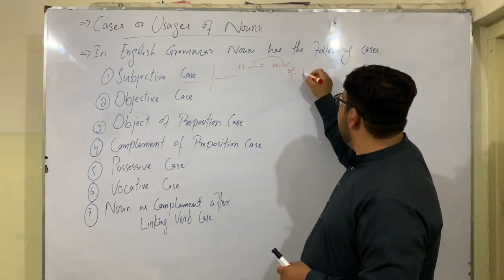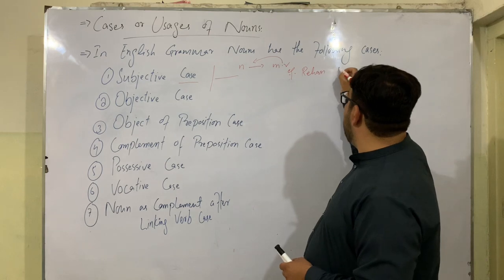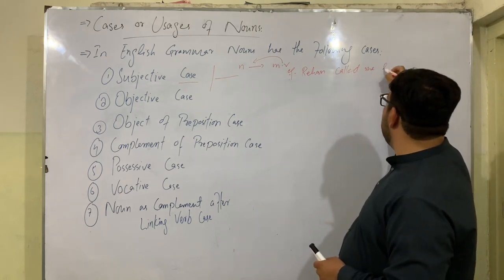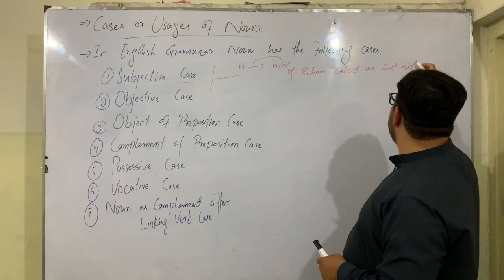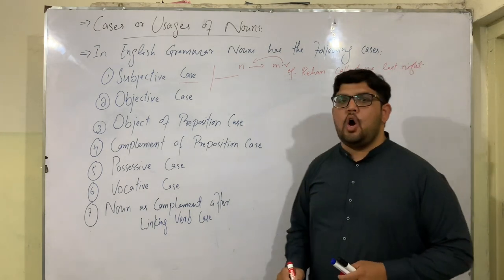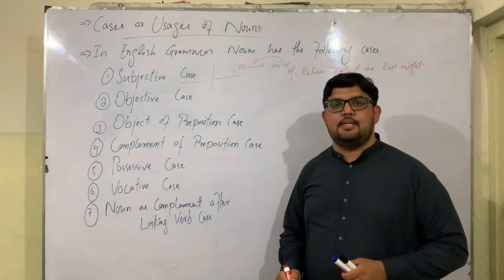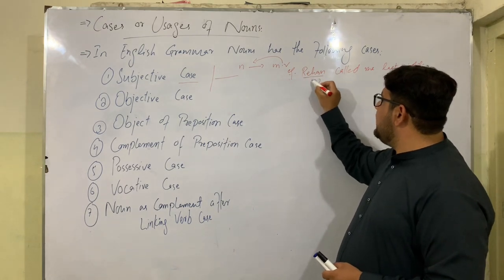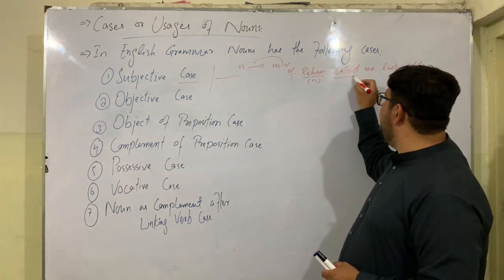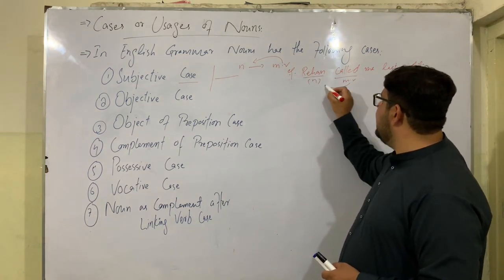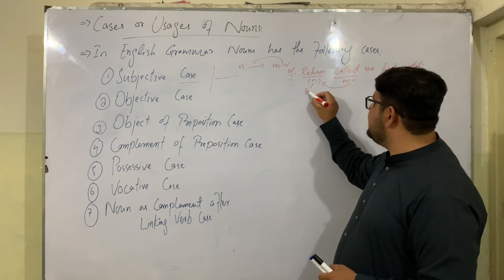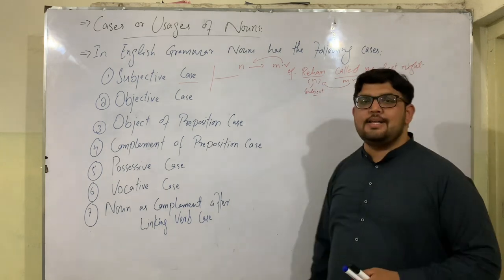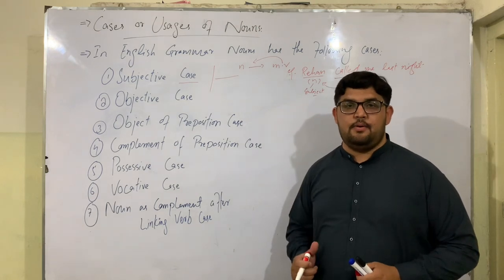For example: 'Rehaan called me last night.' Here, Rehaan is a noun. It comes before the main verb 'called' in the sentence to function as the subject. So that is called the subjective case of noun.